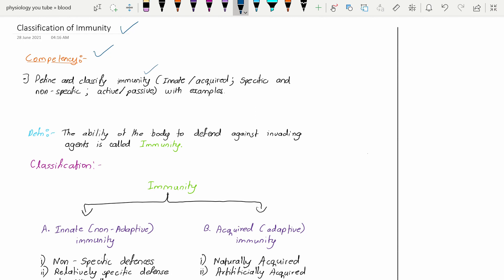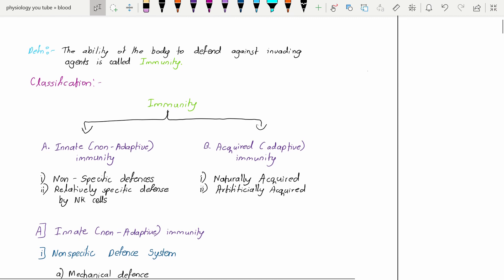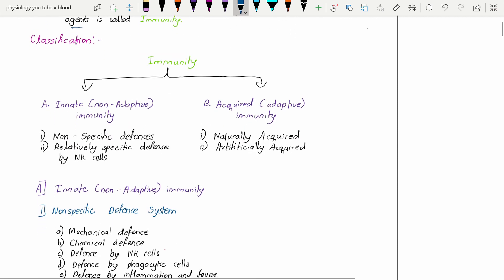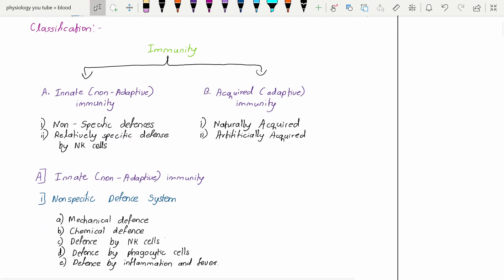Definition of immunity: it is the ability of the body to defend against invading agents. I will repeat it once again - it is the ability of the body to defend against invading agents. This is called immunity.